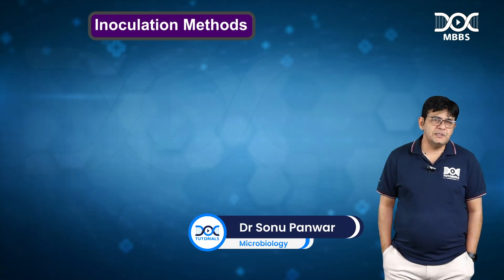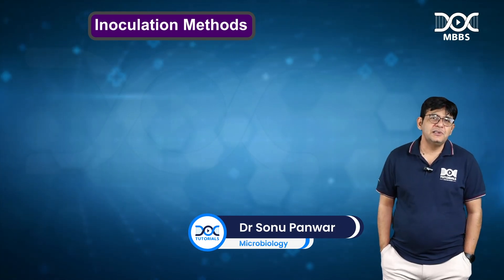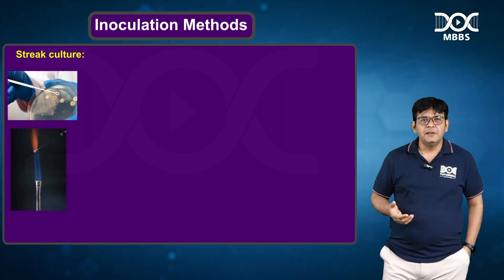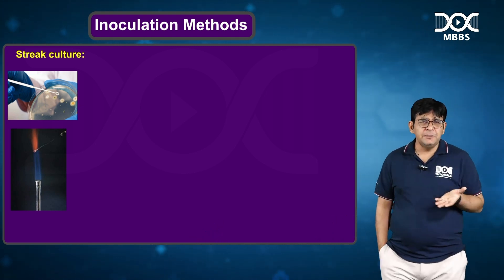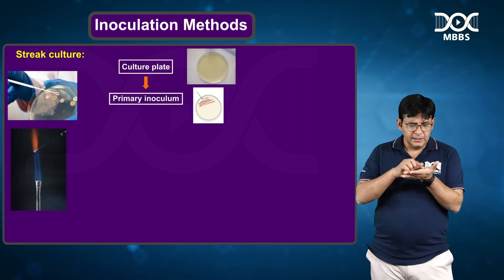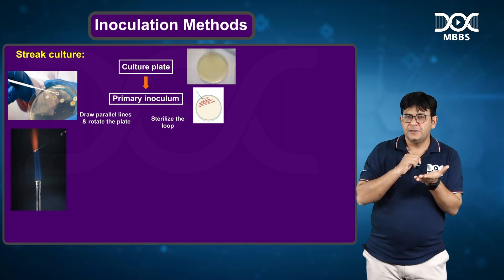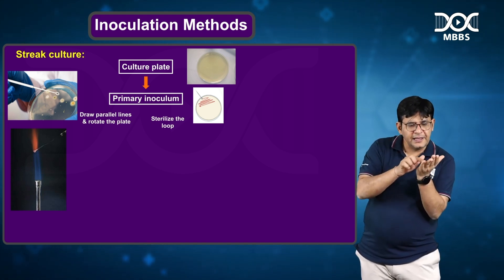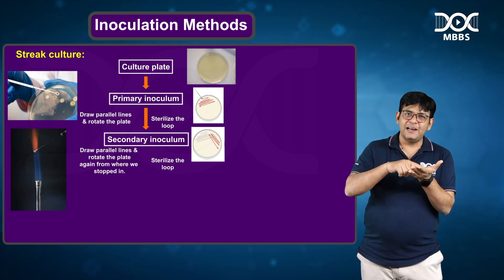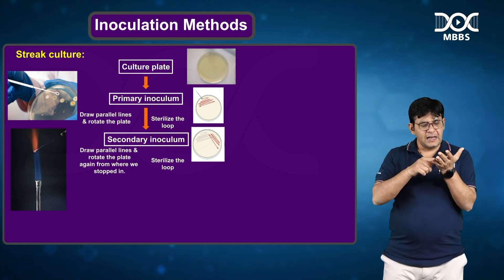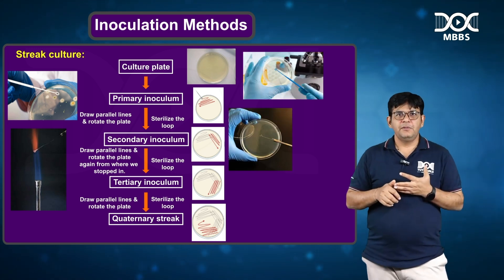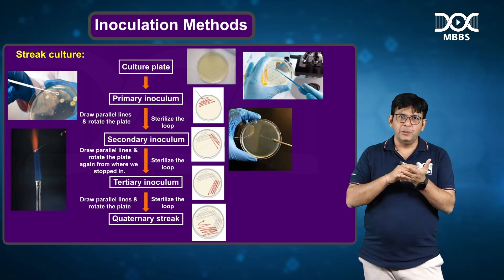For inoculating, you use a method termed as streak culture, which means you do the streaking. When you have the culture plate, you make a primary inoculum, then make parallel lines, rotate the plate, and make parallel lines again. You have a primary inoculum, a secondary inoculum, then a third inoculum, and lastly a tail-like formation — that is what is termed as streaking.